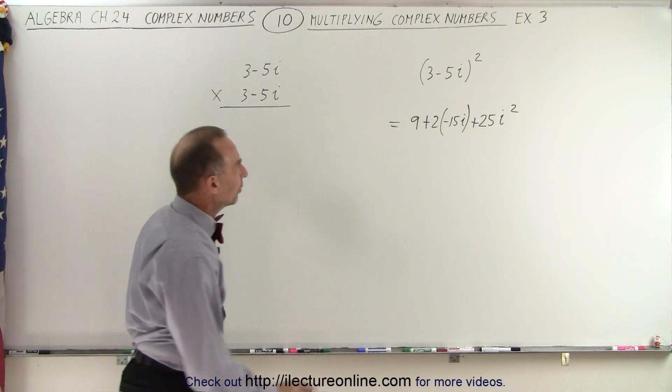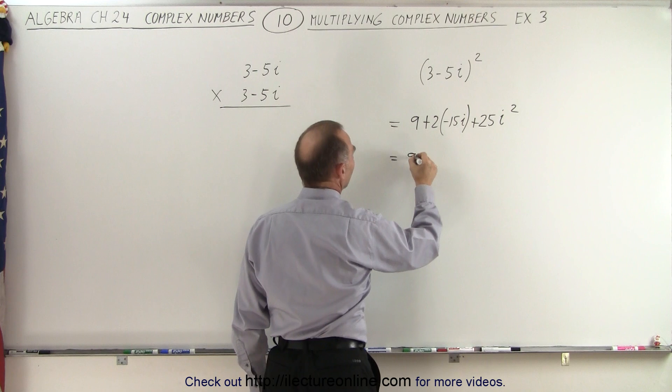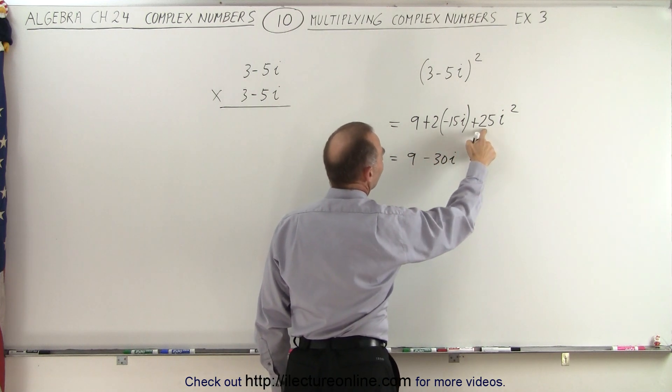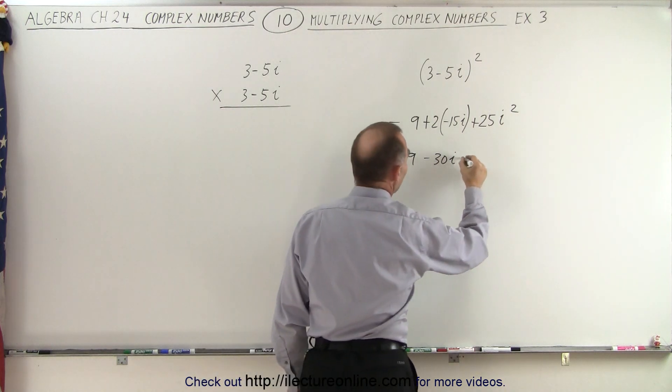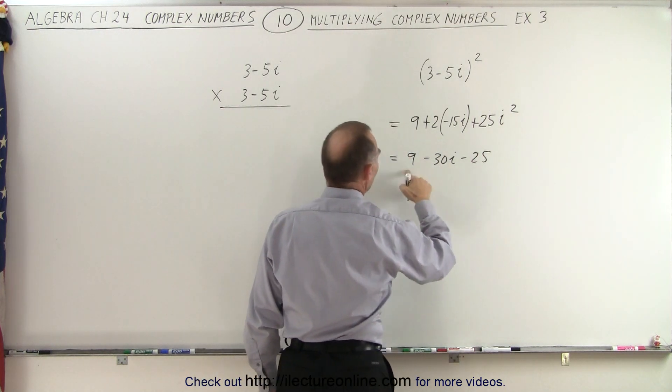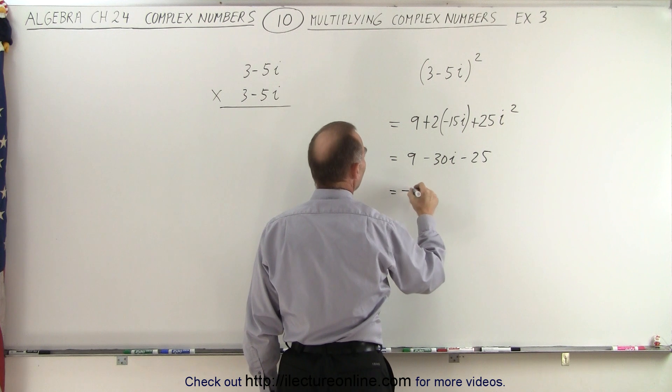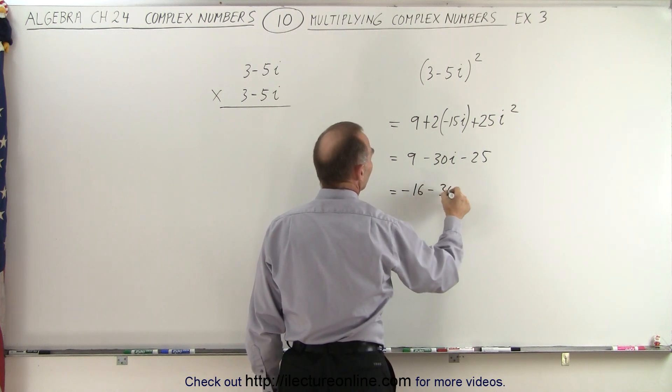Alright, so then when we simplify that, we get 9 minus 30i and 25 times i squared. Remember that i squared is a negative 1, so this becomes a minus 25. And when we add that to the 9, this is equal to minus 16 minus 30i.